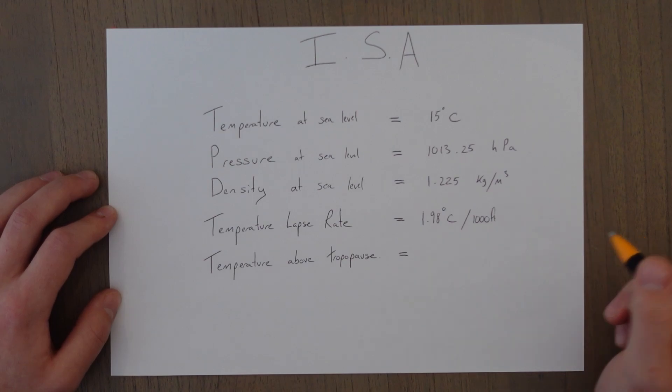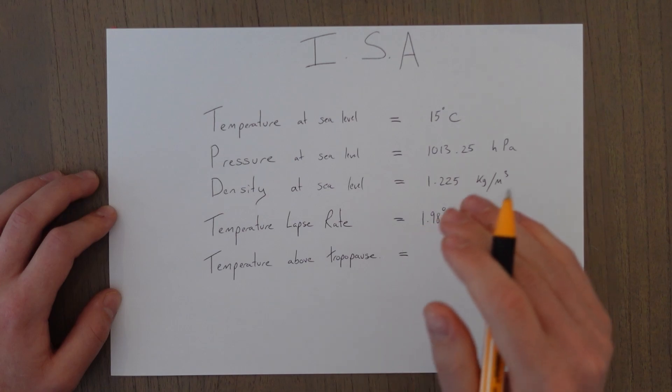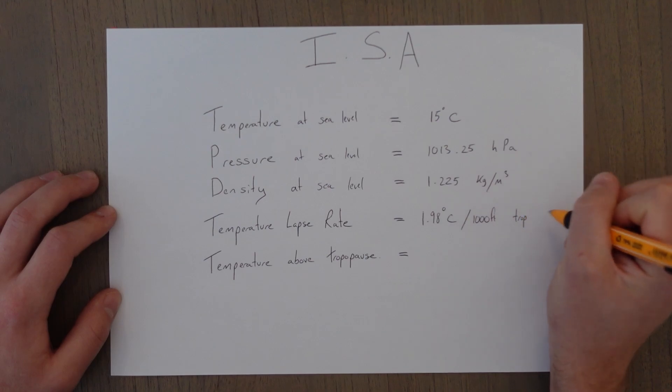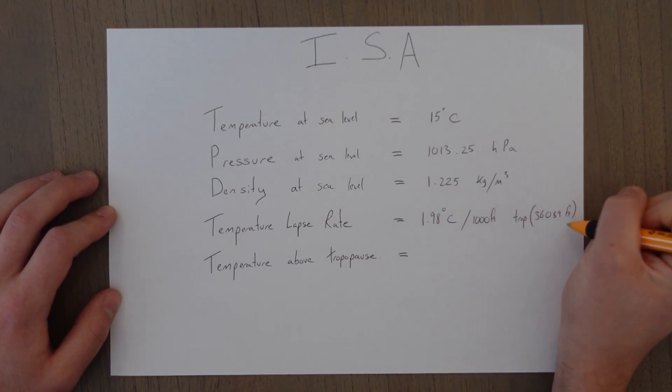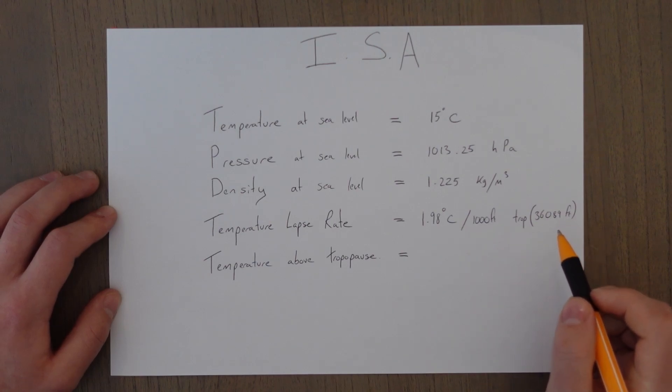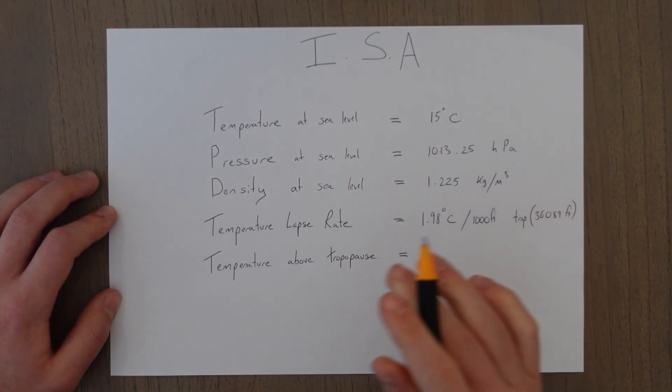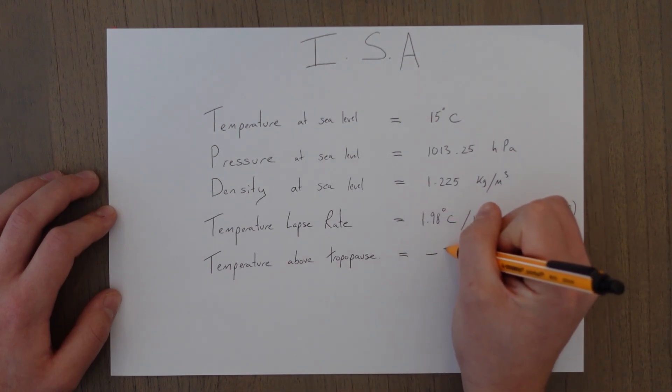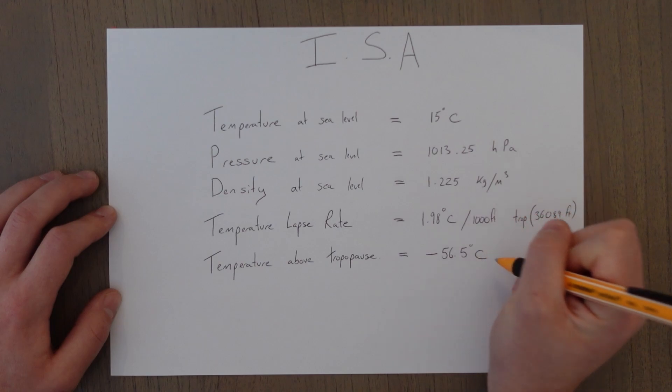This is, of course, until reaching that tropopause that we talked about earlier, which is the point between the troposphere and the stratosphere. At that point, the tropopause occurs at 36,089 feet. So above 36,089, the temperature stops reducing. It remains constant and the temperature above is considered to be minus 56.5 degrees Celsius.